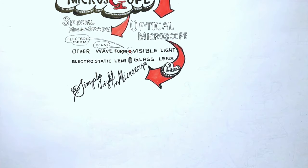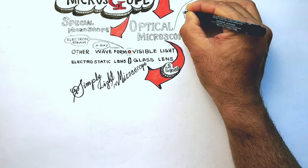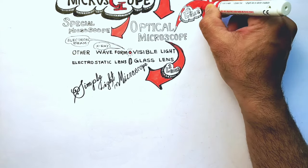Simple light microscope use a single lens to magnify an object, whereas a compound light microscope use two sets of lenses.